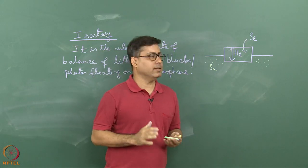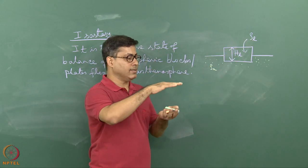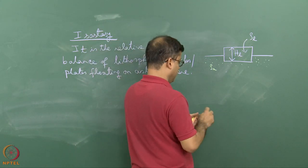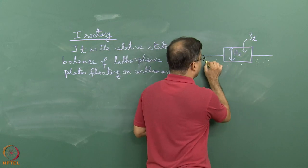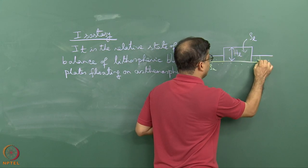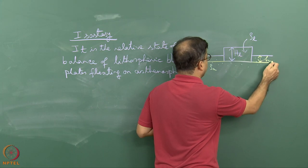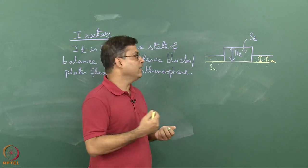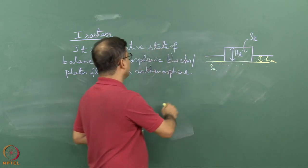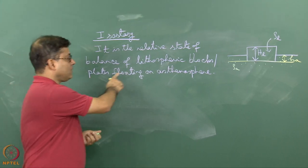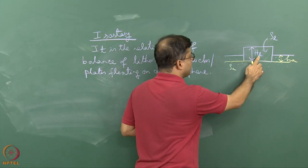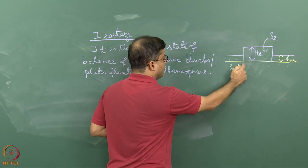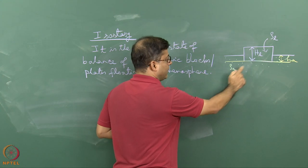Now imagine that this solid is in a stable condition — it is neither sinking nor moving upward. In that case we can find this depth as small h_A. Think of this solid as a lithospheric block or plate. Since lithosphere uses subscript L, and it is floating on asthenosphere with subscript A, we have rho_A and h_A.